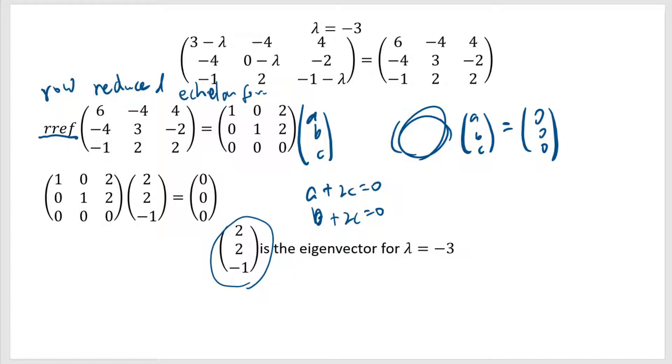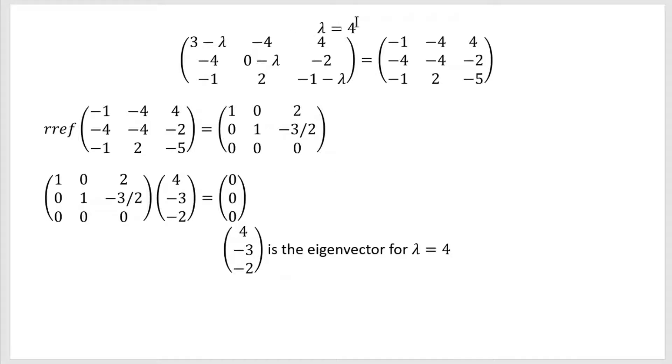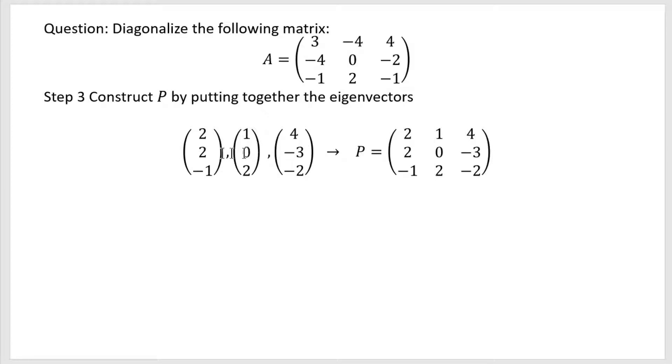Now let's move on. Do the same thing for lambda equals to 4. Calculate the RREF, and then think about what that means. And we find that this is the eigenvector for lambda equals to 4. Once you get these, then what you can do is you write all the eigenvectors you found and place them side by side, and that's going to be your P. And using this, we are going to diagonalize this matrix A. Okay, so let me show you how that's done.